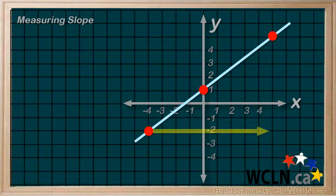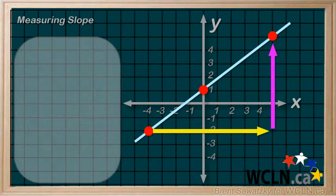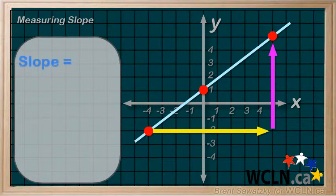That is, our run, and then our rise. And now it's time to pull out the definition of our slope. Again, slope equals rise over run.